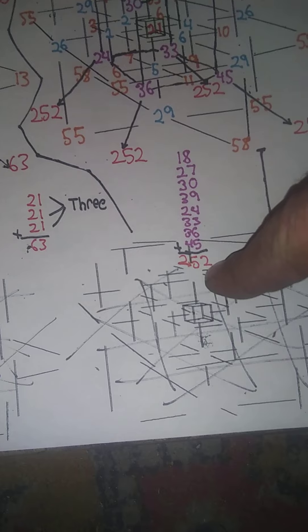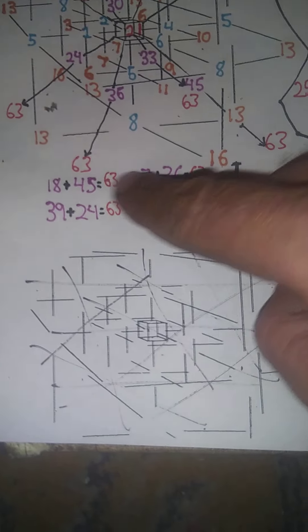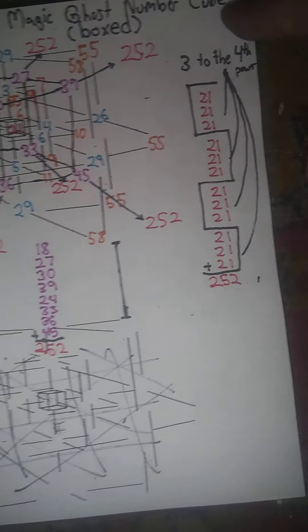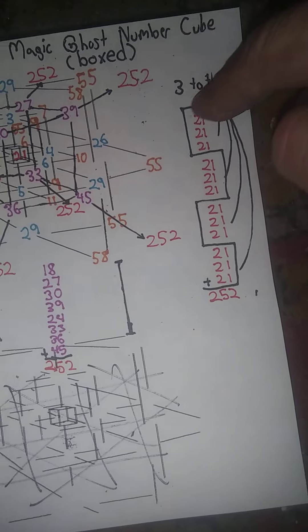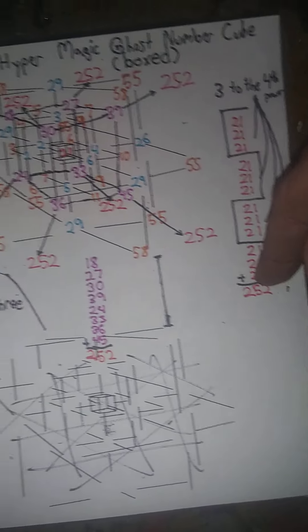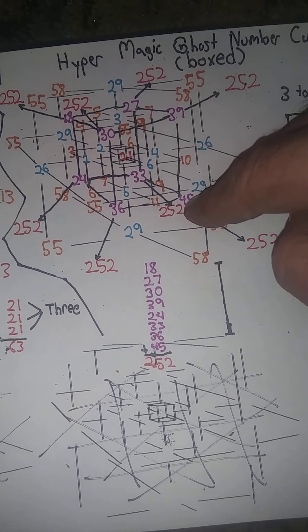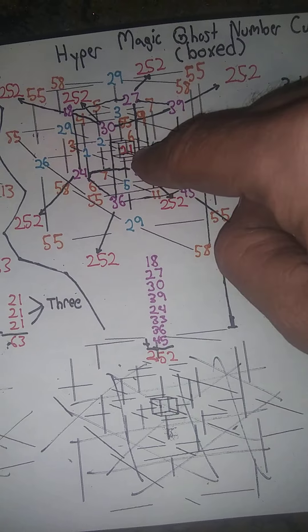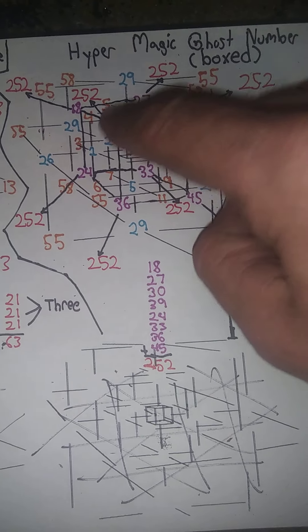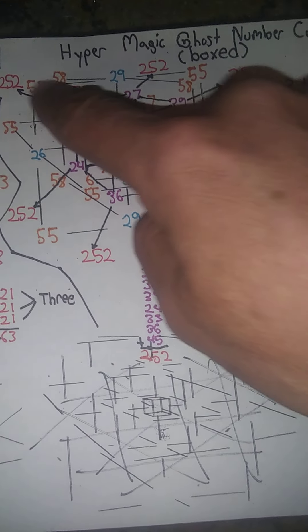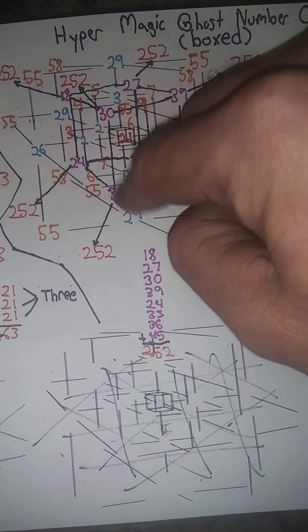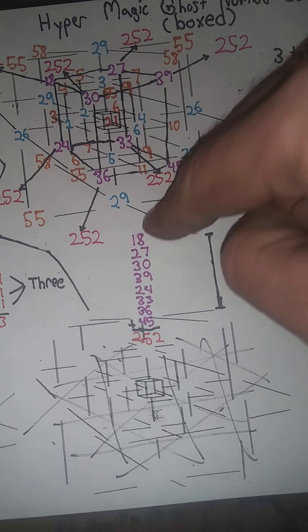It's a different alignment of the central inner ghost numbers to their outer ghost number sum. These are the different alignments: diagonals, diagonals, and a complete box set. It goes from three inner ghost numbers — the central ghost numbers — to three to the fourth power. Another reason I drew these lines out here is to show that the box may be expanding, the central ghost number may be expanding outwards.